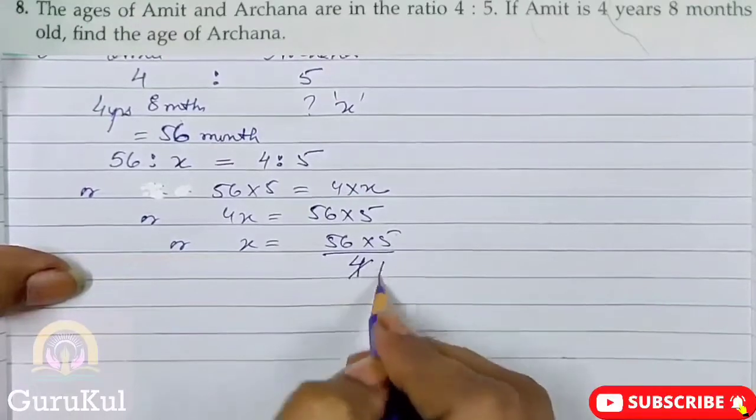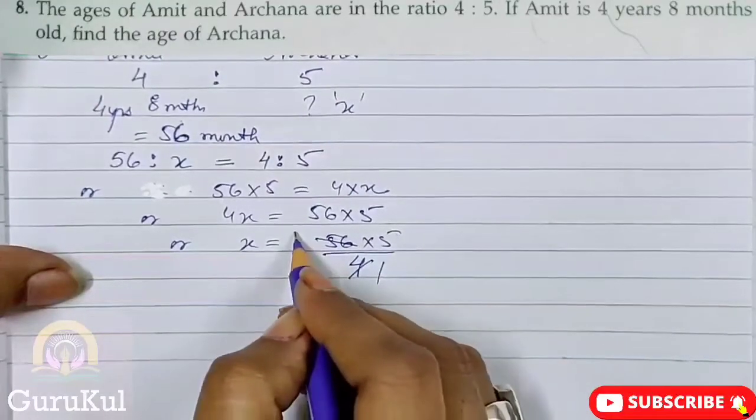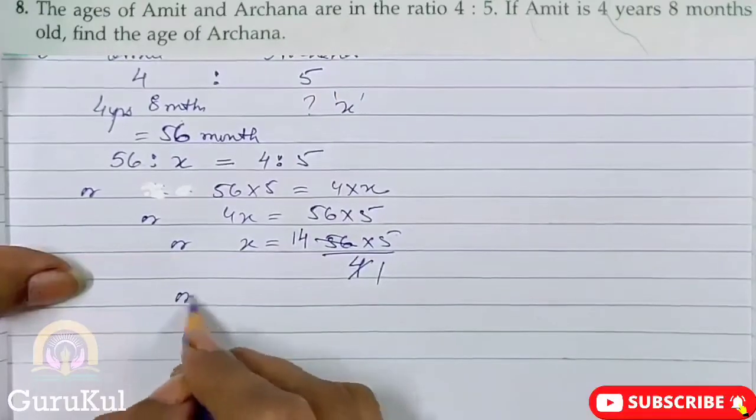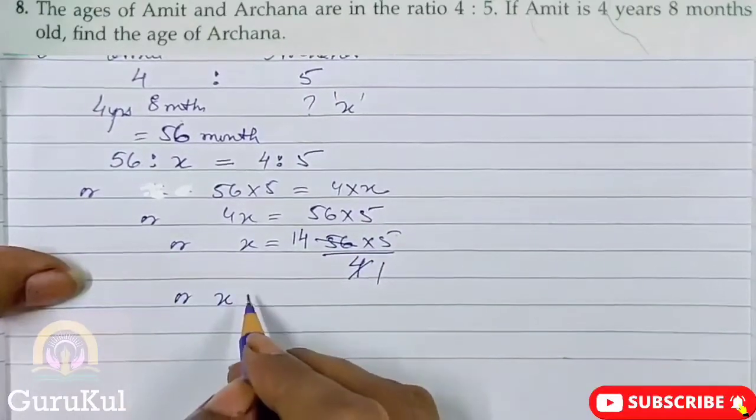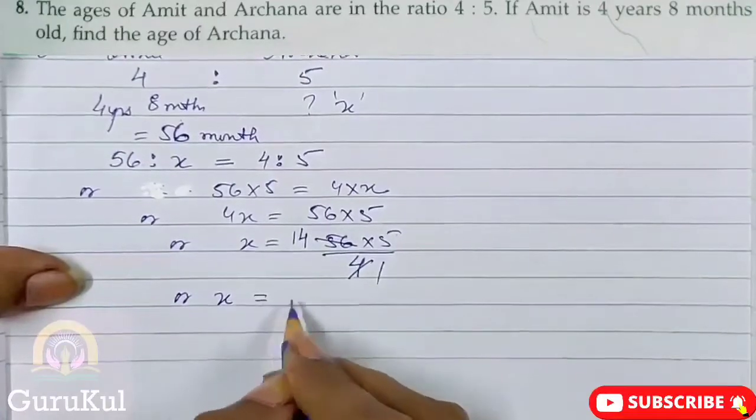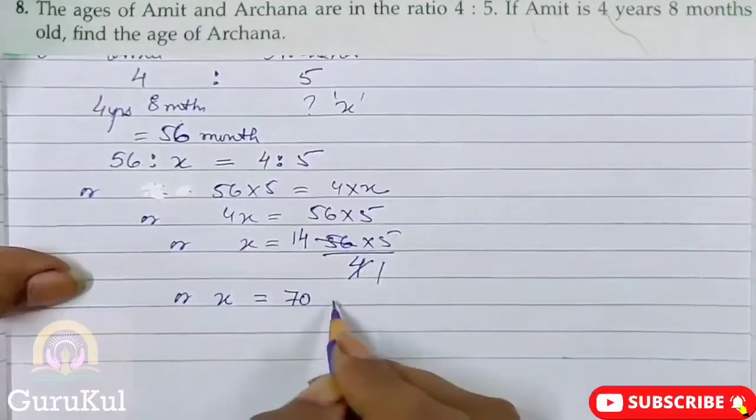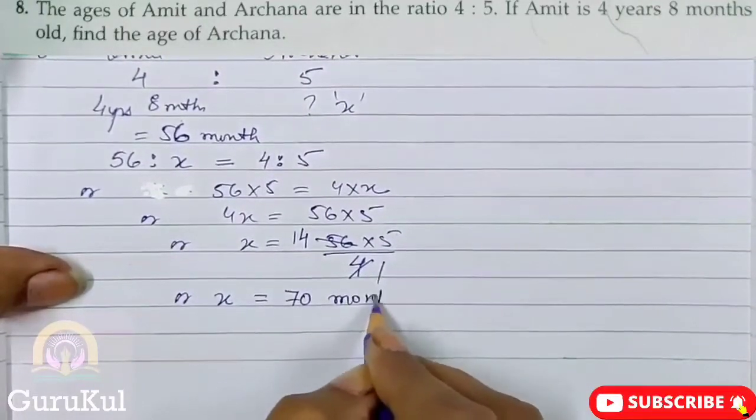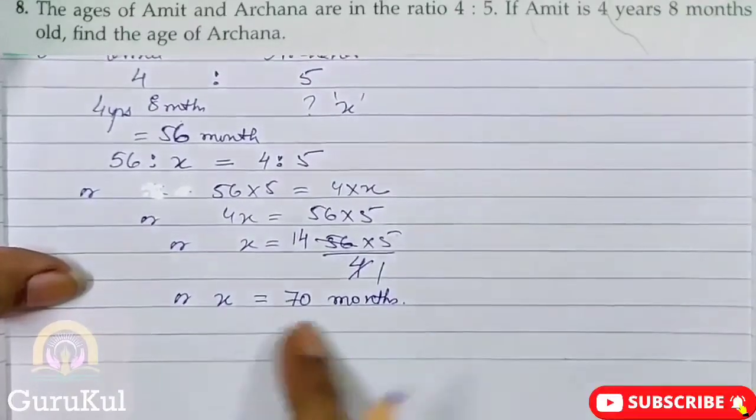Or X is equal to 56 into 5 by 4. 4 fourteens are 56. And X is equal to 14 into 5 will give me 70 months.